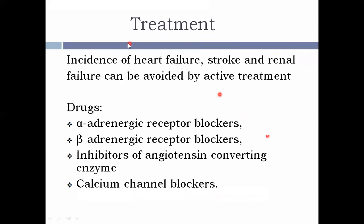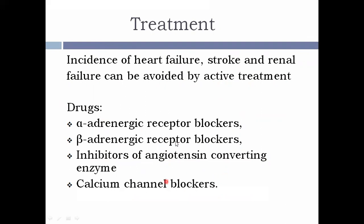Heart failure, stroke, and renal failure can be avoided by undergoing treatment for hypertension. The drugs used for treatment include alpha-adrenergic receptor blockers and beta-adrenergic receptor blockers, which block the action of adrenaline and noradrenaline. Also used are inhibitors of angiotensin converting enzyme, thus decreasing angiotensin 2 and aldosterone, and calcium channel blockers.